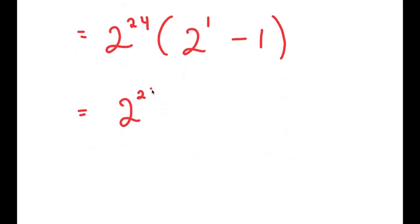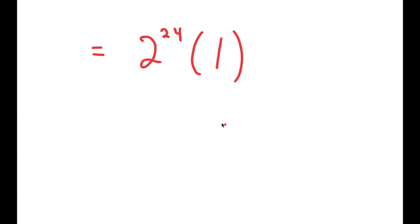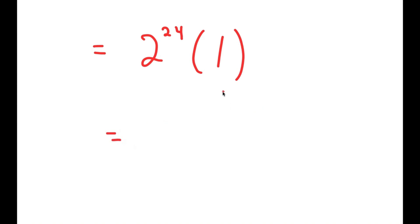This is equal to 2^24 times (2 minus 1), which is equal to 2^24 times 1. And anything times 1 is just equal to itself, so this equals 2^24.